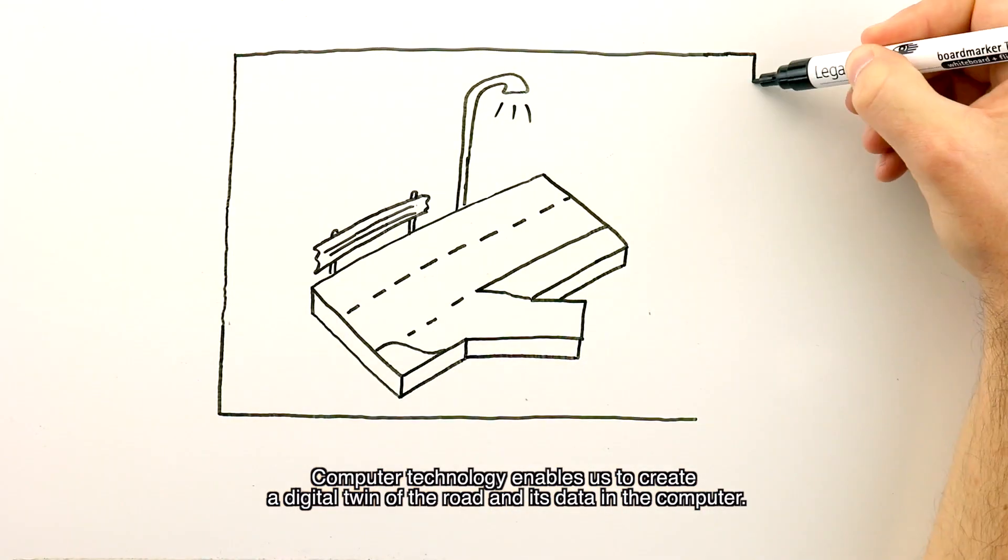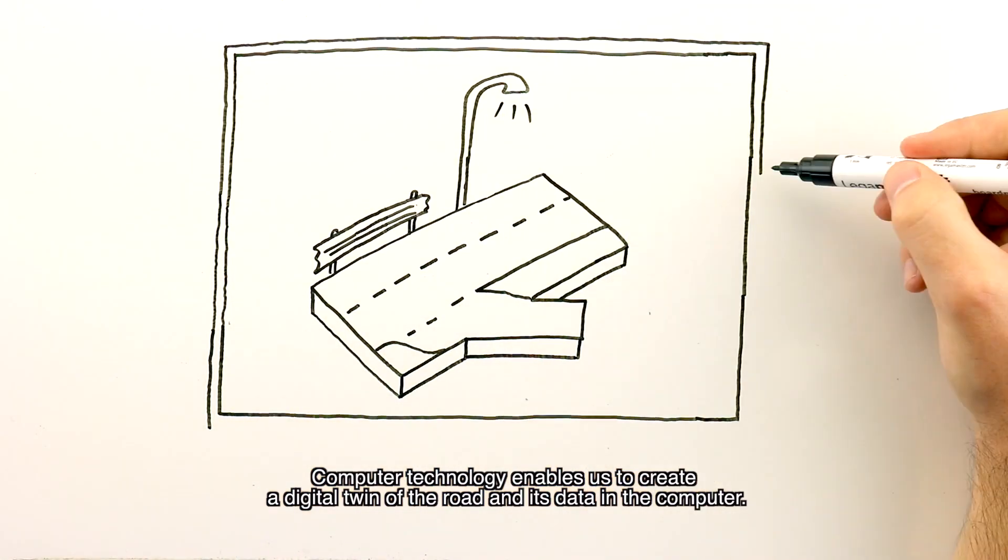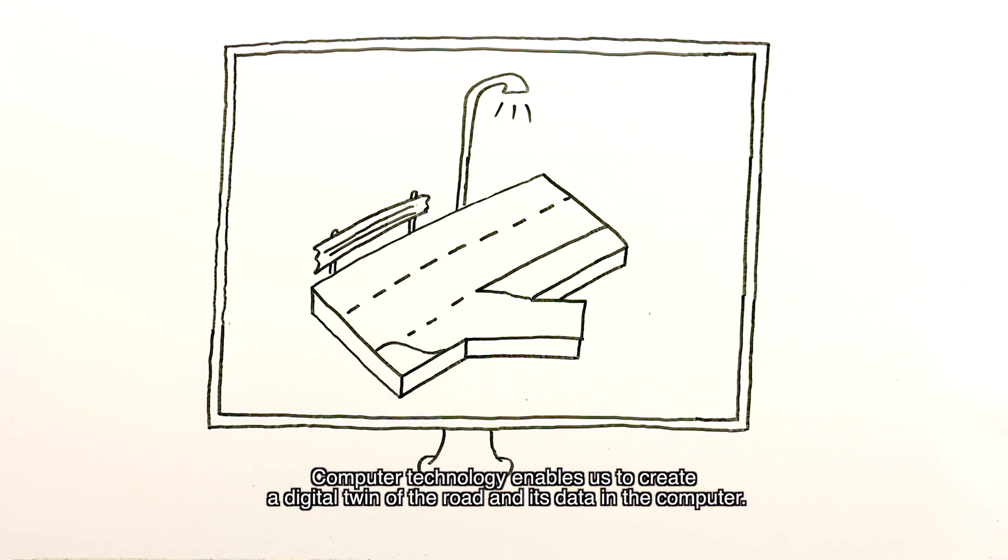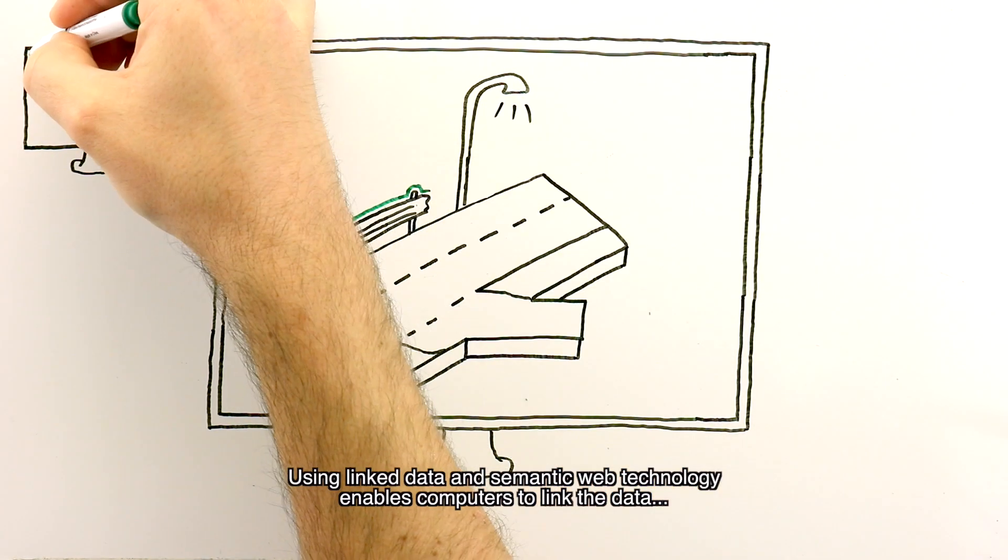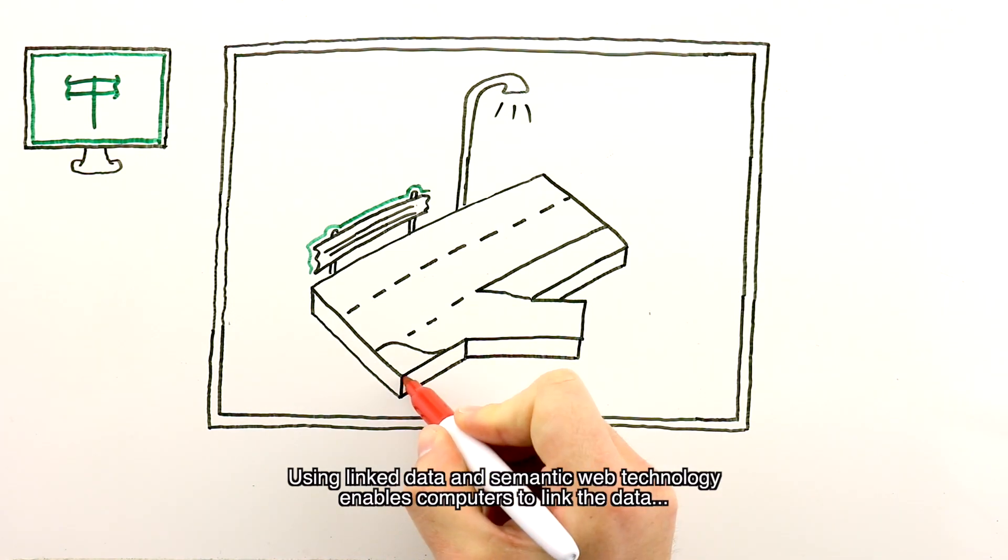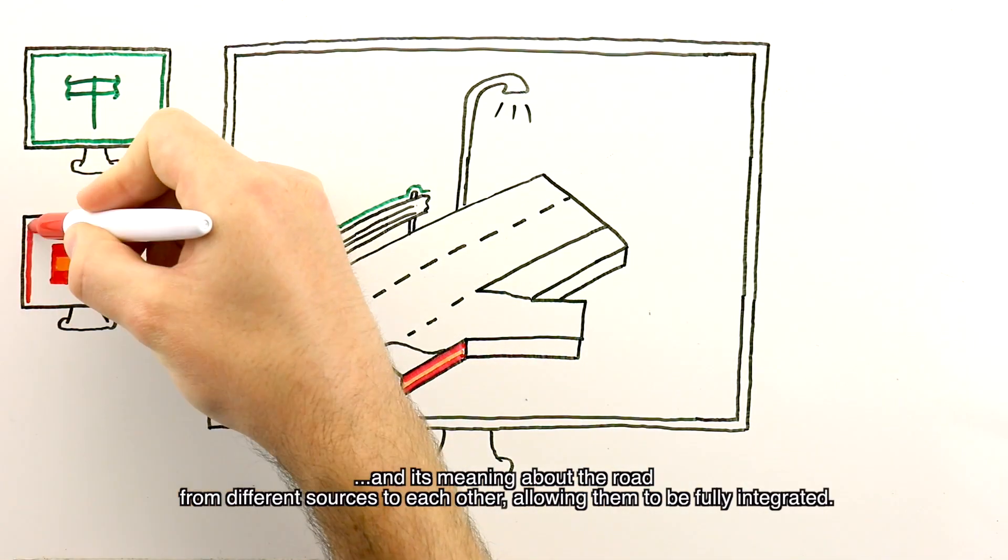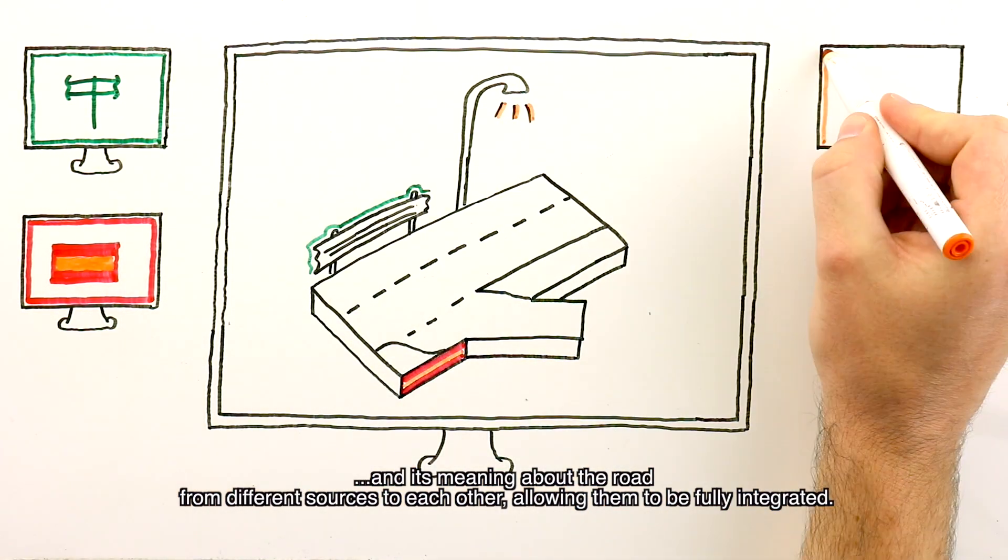Computer technology enables us to create a digital twin of the road and its data in the computer. Using linked data and semantic web technology enables computers to link the data and its meaning about the road from different sources to each other, allowing them to be fully integrated.